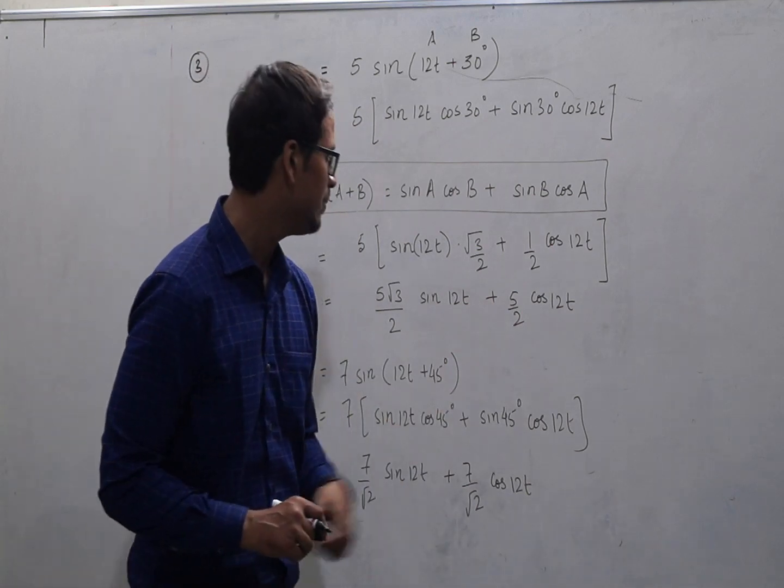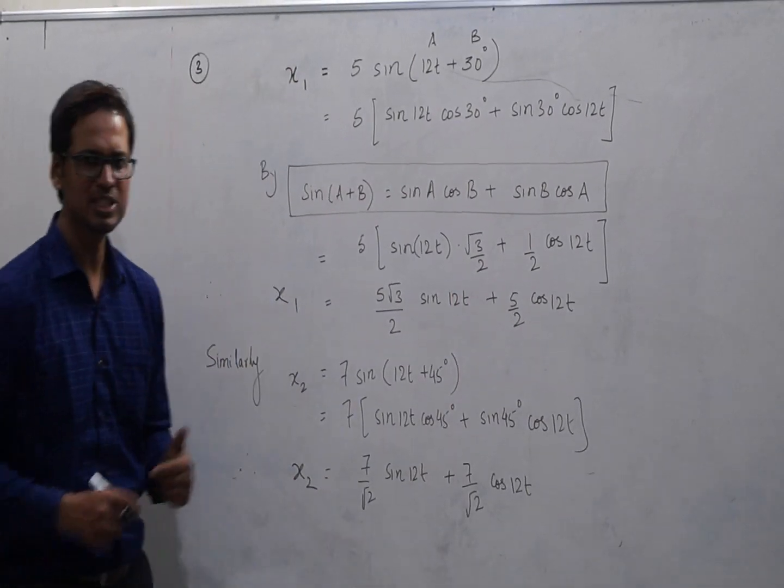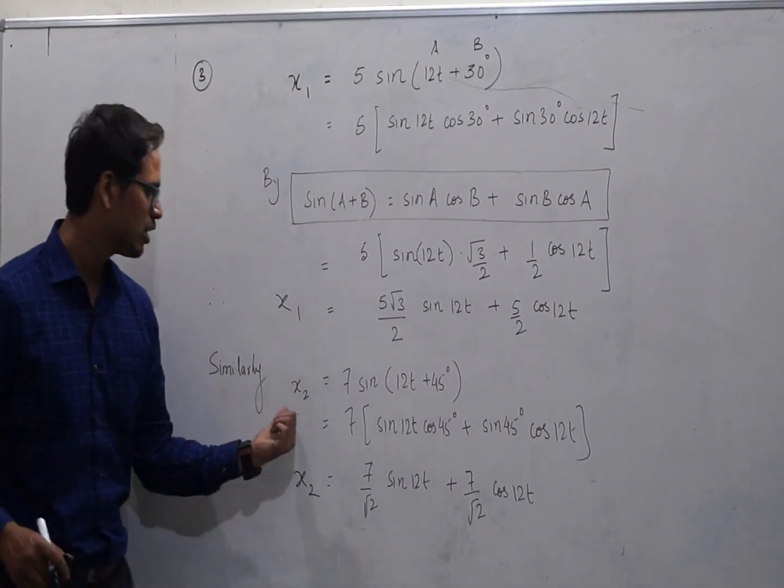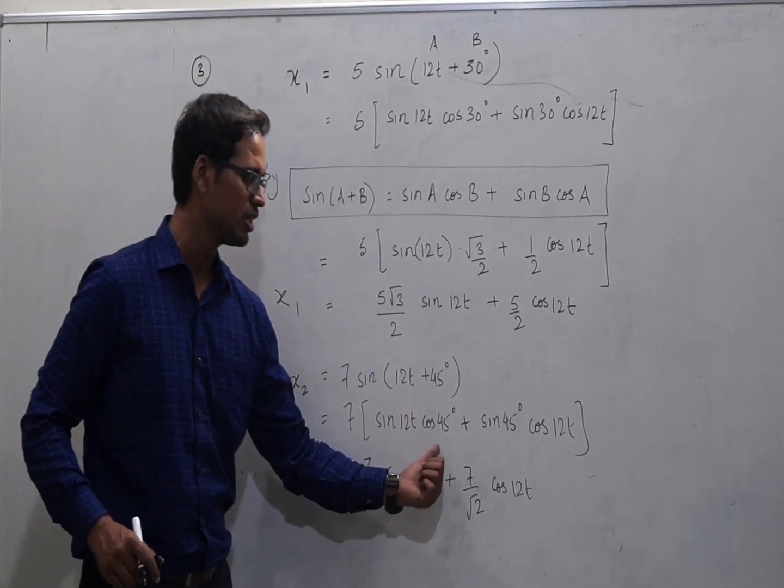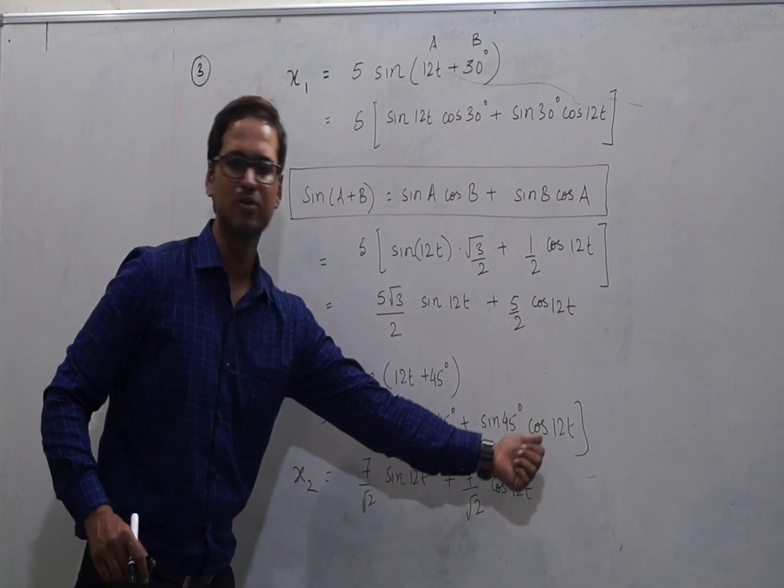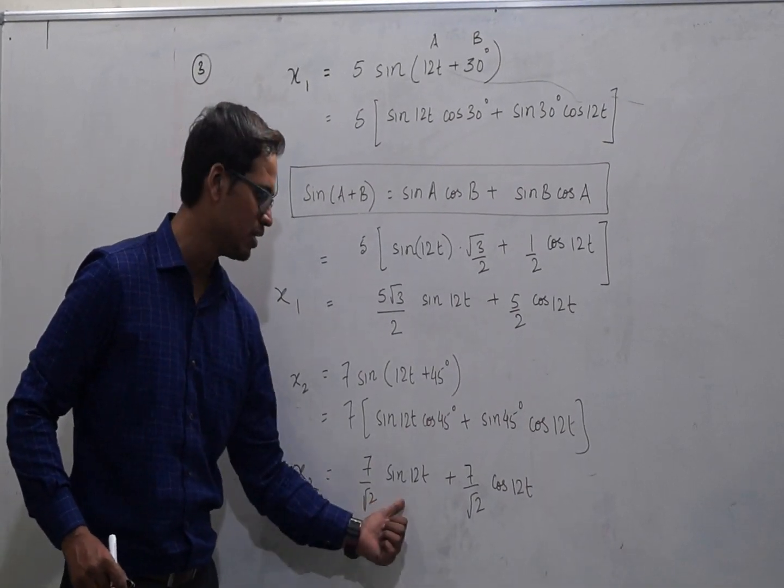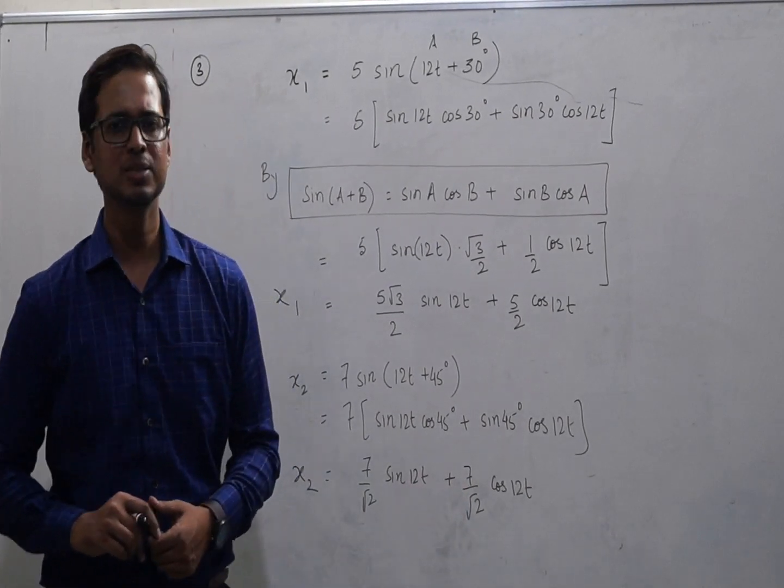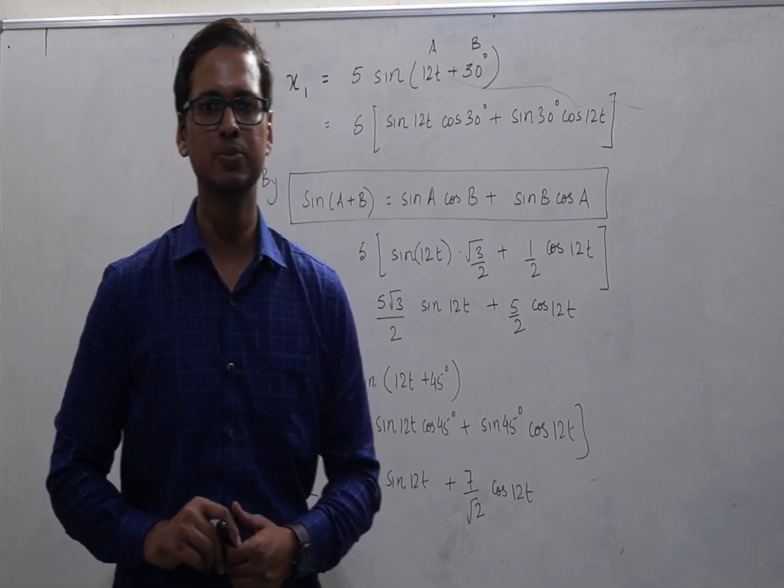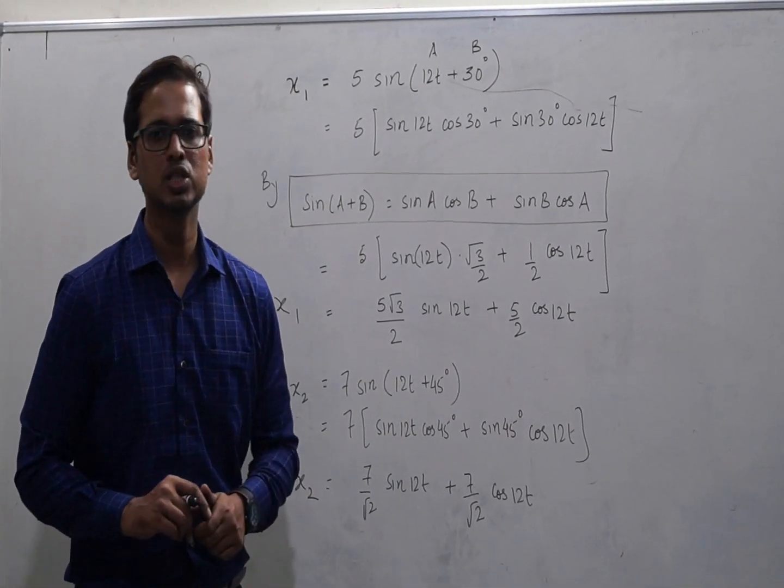In a similar fashion, in exactly the same way, we can also simplify x2 as 7 sine 12t cos 45 plus sine 45 cos 12t which gives you 7 by root 2 sine 12t plus 7 by root 2 cos 12t. So this was the first part of the question where we needed to express it in that alpha sine 12t plus beta cos 12t form.